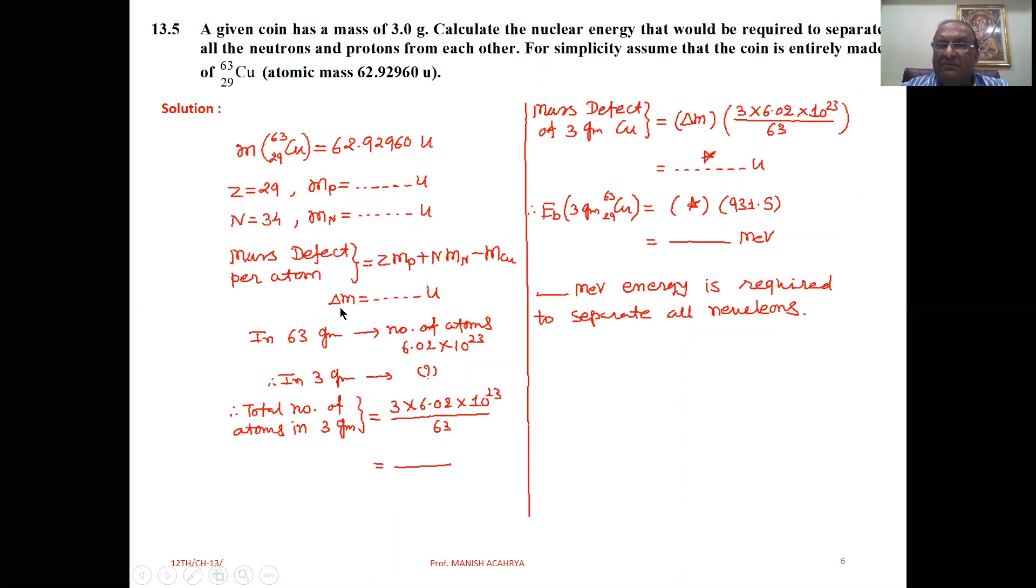Now per atom, we have mass defect delta M. Therefore, in this many atoms, how much mass defect is there? So mass defect of 3 gram Cu is delta M times the total number of atoms. Then solve it. You will get the total mass defect.